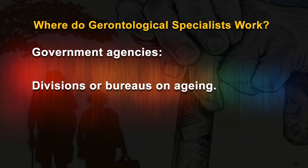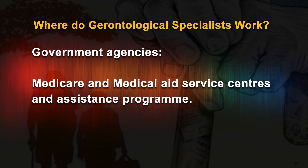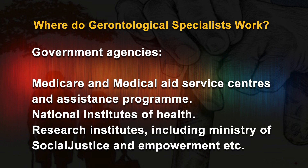Government agencies such as divisions or bureaus on aging, social welfare departments, social security administration offices, medical care and medical aid service centers, national institutes of health, and research institutes — including the Ministry of Social Justice and Empowerment — provide opportunities to work with older people.